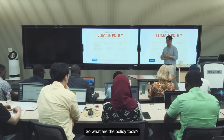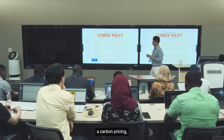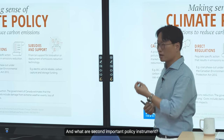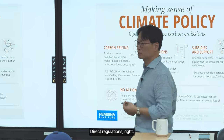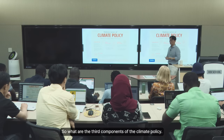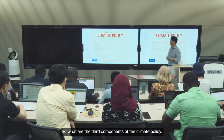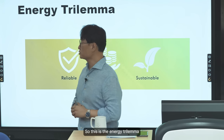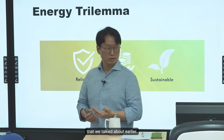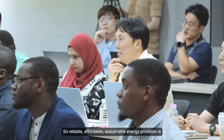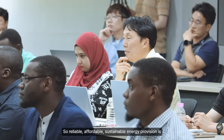So what are the policy tools? First, carbon pricing and carbon trade policies. The second important policy instrument is direct regulations. The third component of climate policy is subsidies and support. This is the energy trilemma we talked about earlier — reliable, affordable, and sustainable energy provision is the core objective of energy policy, and sometimes these objectives involve trade-offs and conflicts with each other.